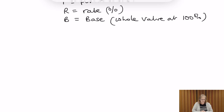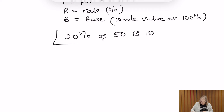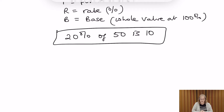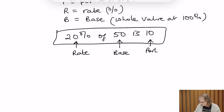We're going to start with a statement we know to be true: 20% of 50 is 10. We can identify the rate here because of the percent sign. The 50 is the whole number at 100%, so that is our base, and the 10 is our portion — the part of the base according to the percentage.